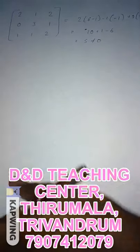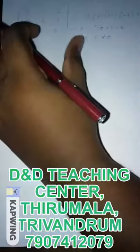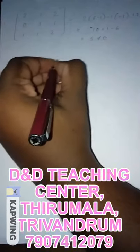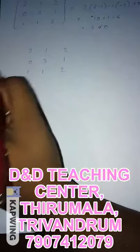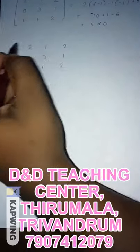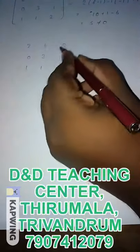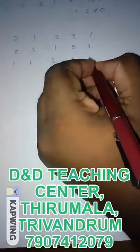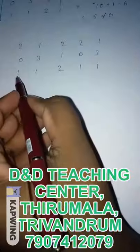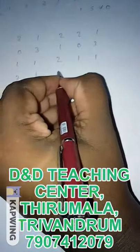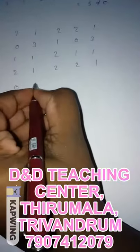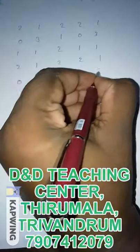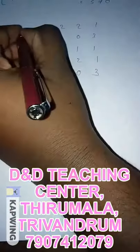Then we can find the inverse of the matrix. For that, first of all, write the matrix again like this. Then take these two rows and write down these two rows adjacent to the third row like this. Then take these first two columns and write it next to the third column.